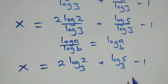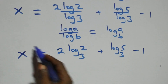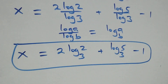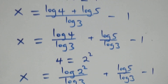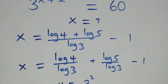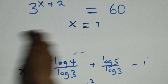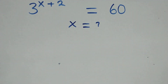The value of x is therefore two log two base three, plus log five base three, minus one. Now let us check whether this satisfies the given problem. We substitute the value of x back in.